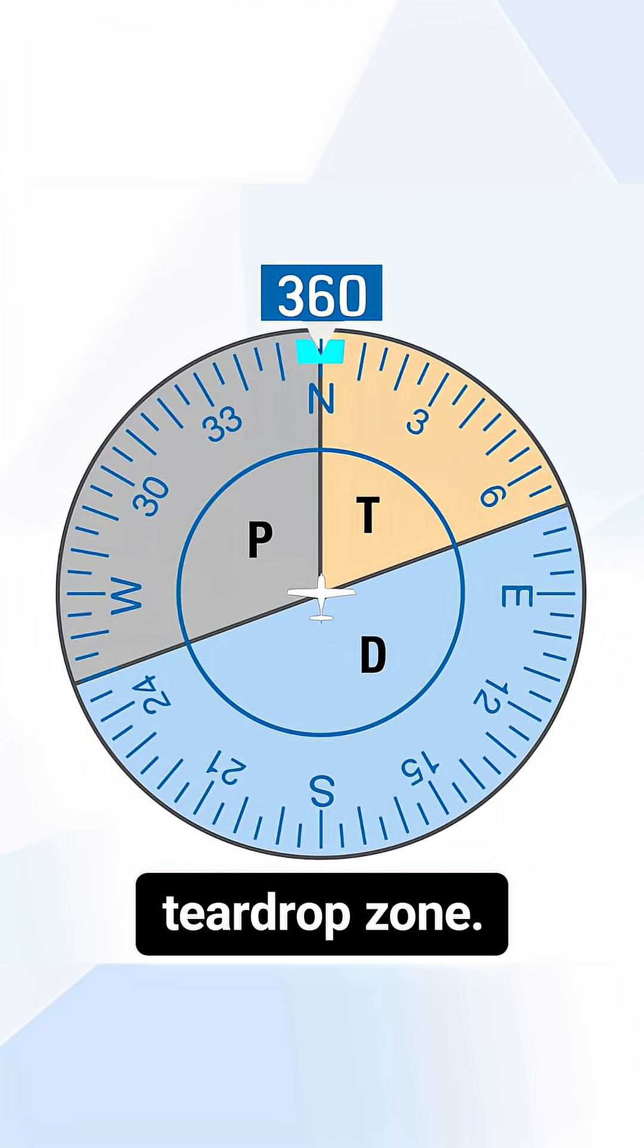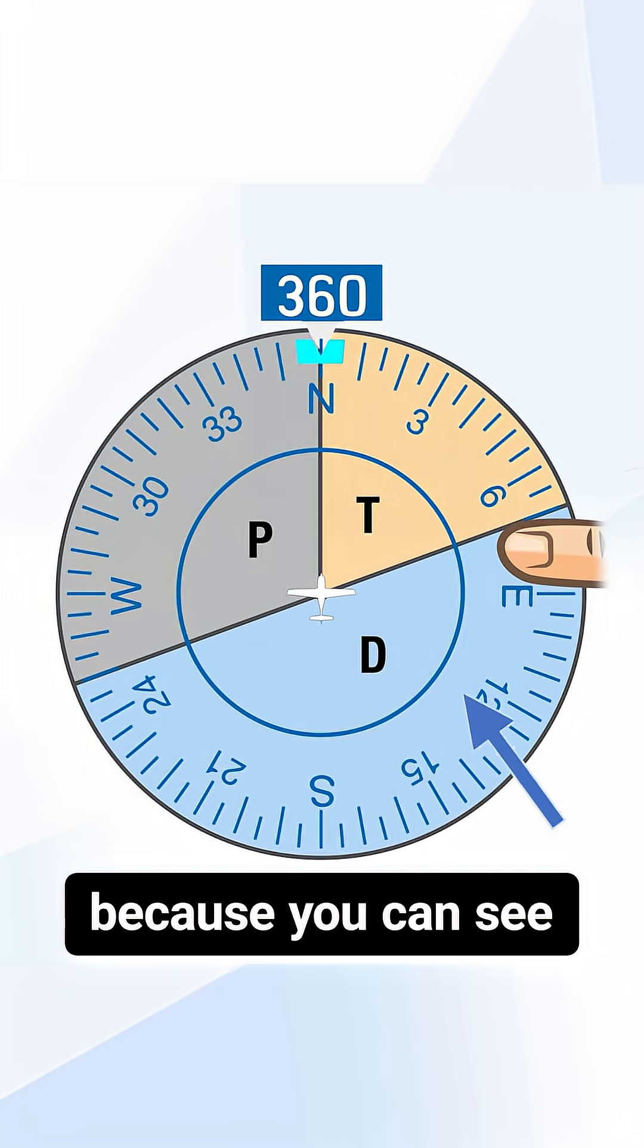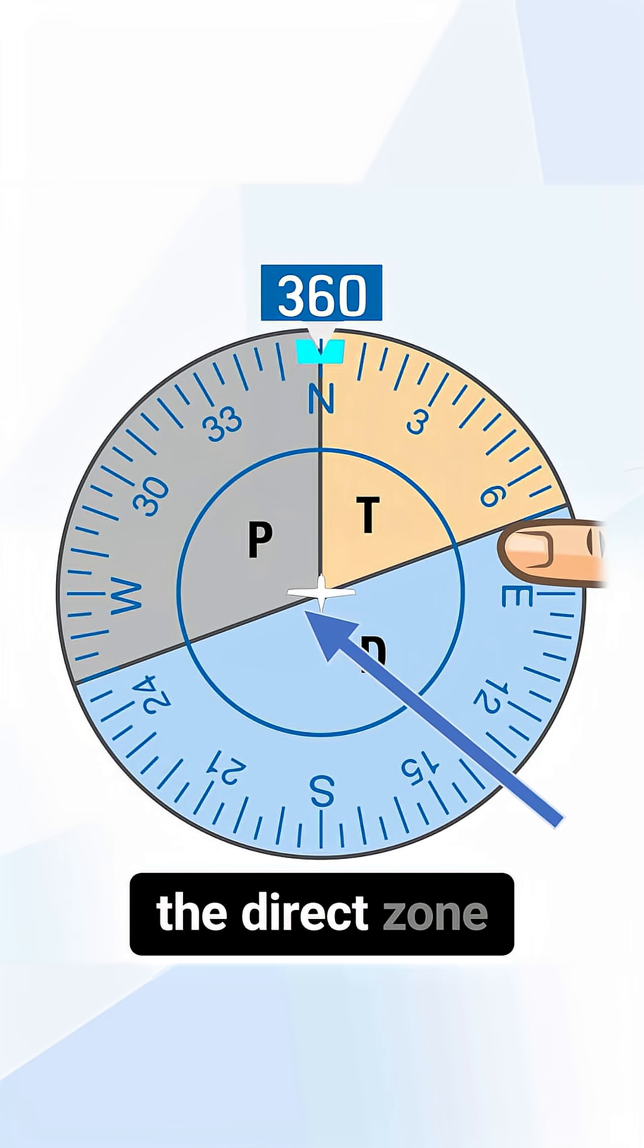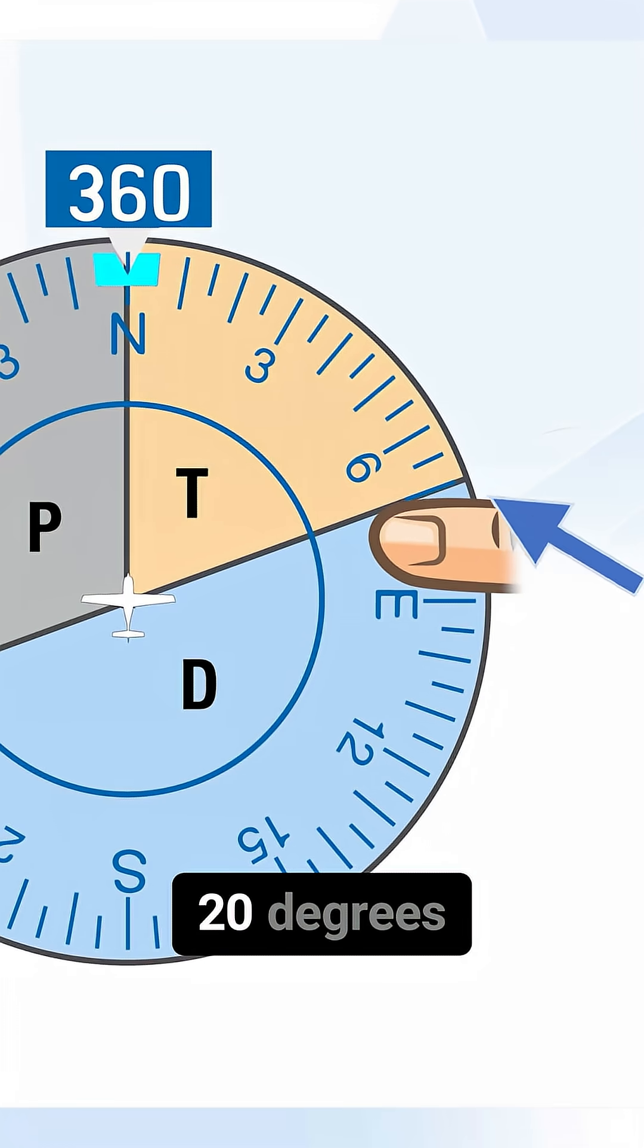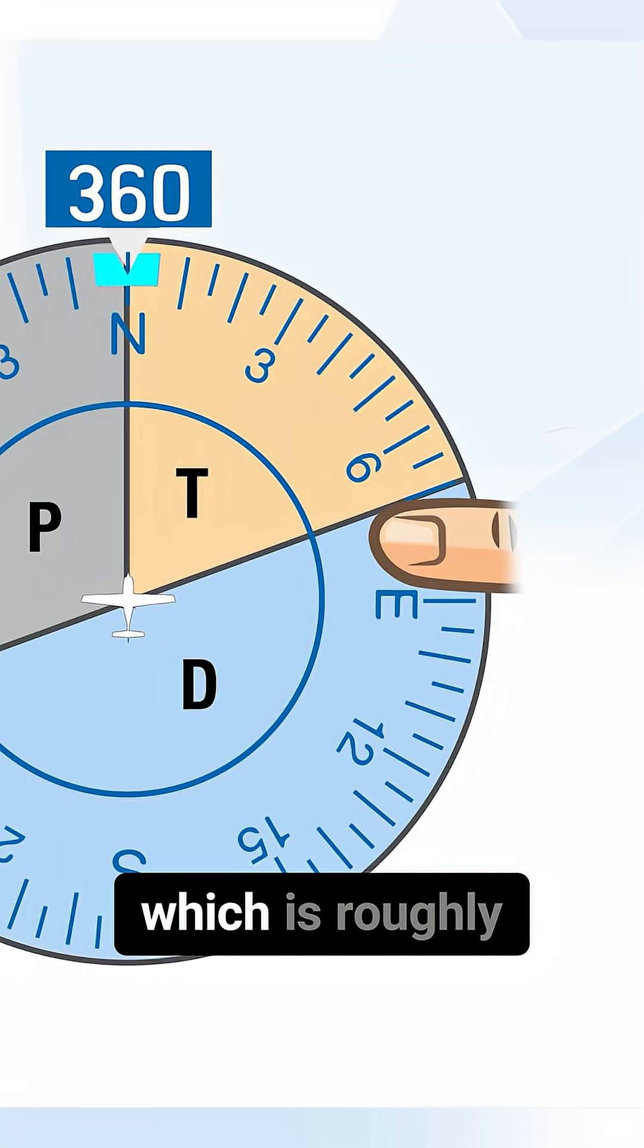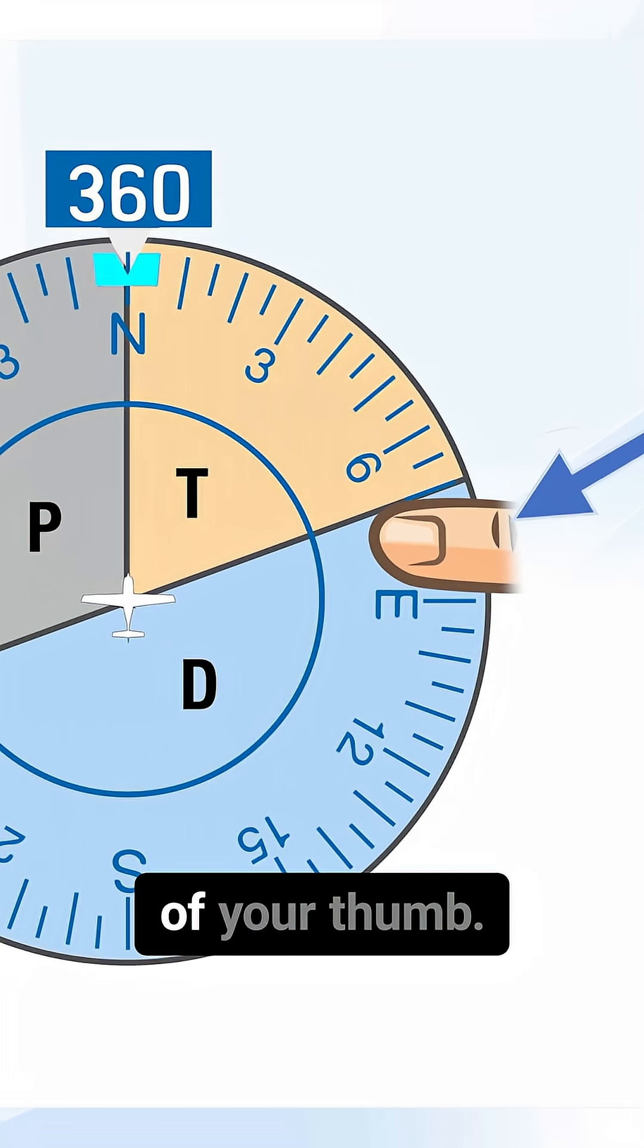This is the teardrop zone and this is the parallel zone. We call it the thumb rule because you can see the line that separates the direct zone from the teardrop and the parallel is angled 20 degrees over horizontal, which is roughly the width of your thumb.